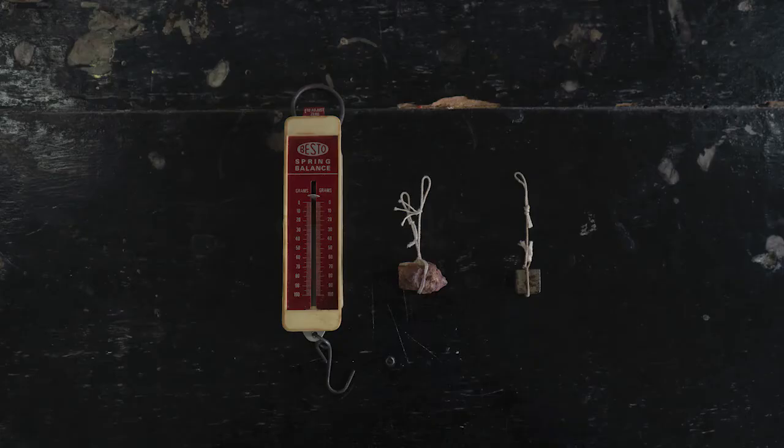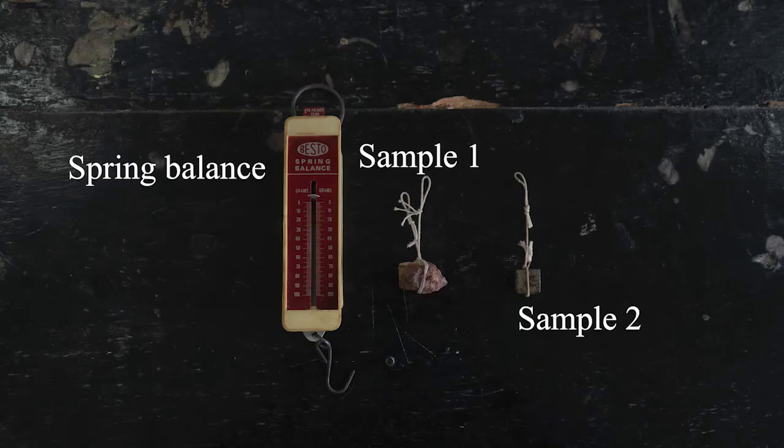Starting with the apparatus, we will need a spring balance, sample 1, and sample 2. In this case, sample 1 is a rock and sample 2 is a metal object.